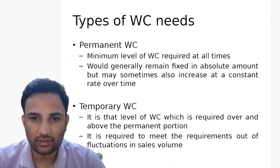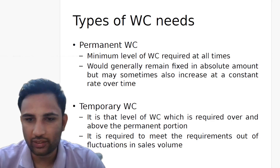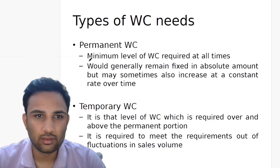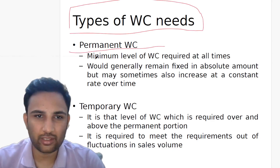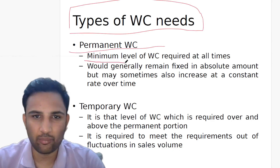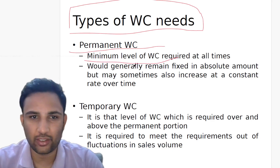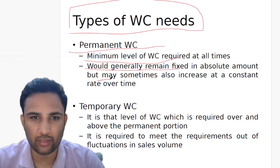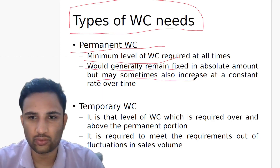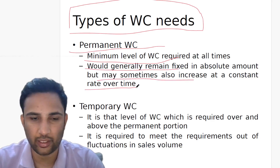There are two types of working capital: permanent and temporary. Permanent working capital is the minimum level of working capital required at all times. It would generally remain fixed in absolute amount, but may sometimes also increase at a constant rate over time.